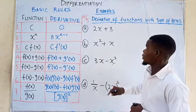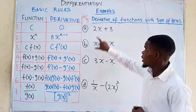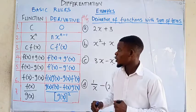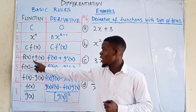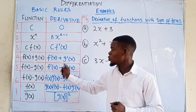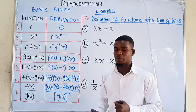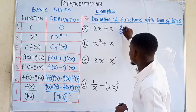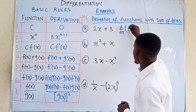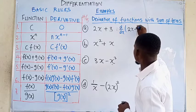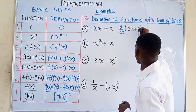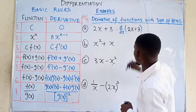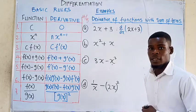So the first example is 2x + 3, which is a function that is the sum of two terms. The fourth rule tells us we just differentiate the first term and add it to the derivative of the second term. So we take the derivative of 2x + 3, which means we differentiate 2x and then add the derivative of 3.